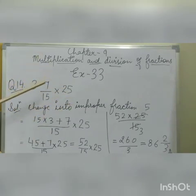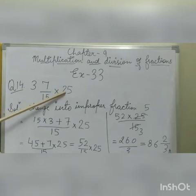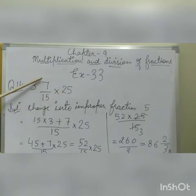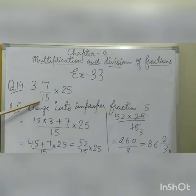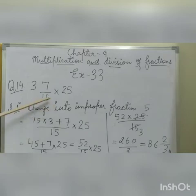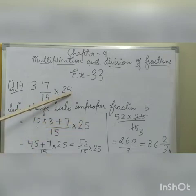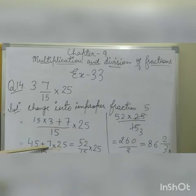Let's solve one more question — question number 14: 3 and 7/15 multiplied by 25. First, we change the mixed fraction into an improper fraction. We multiply 15 by 3 and add 7, giving us 15 multiplied by 3 plus 7 upon 15, multiplied by the whole number 25. That gives us 45 plus 7 upon 15, multiplied by 25, which is 52 upon 15 multiplied by 25.